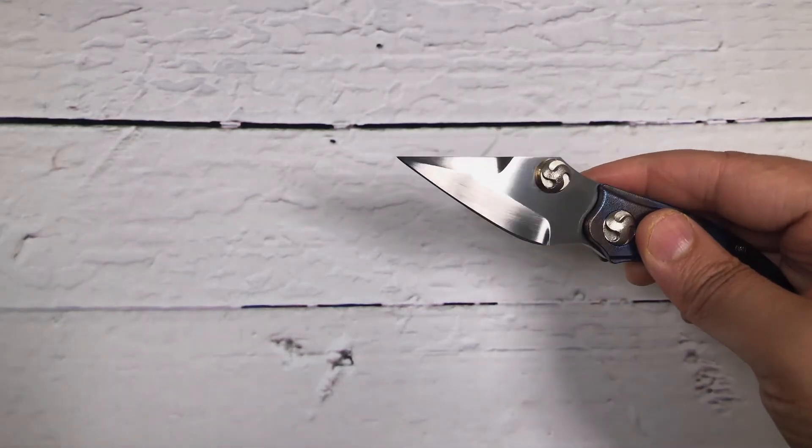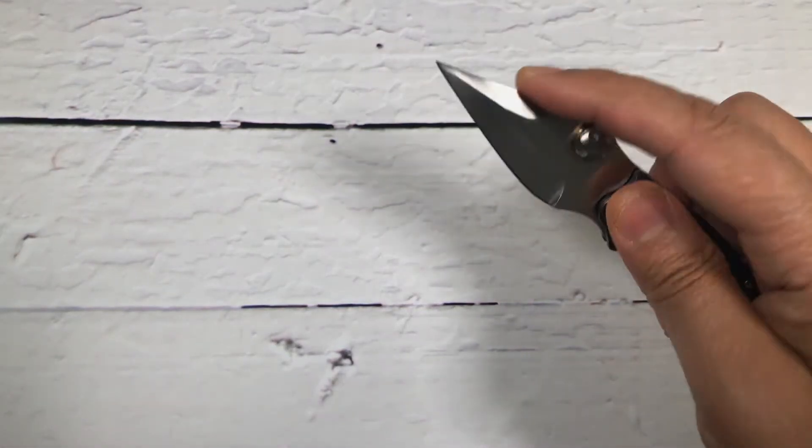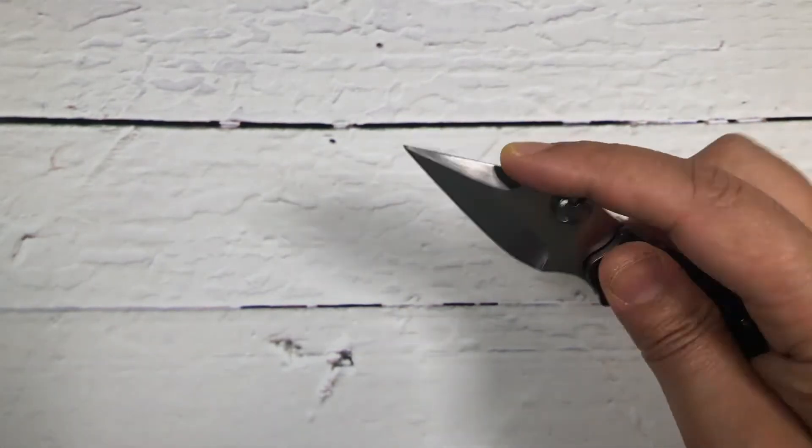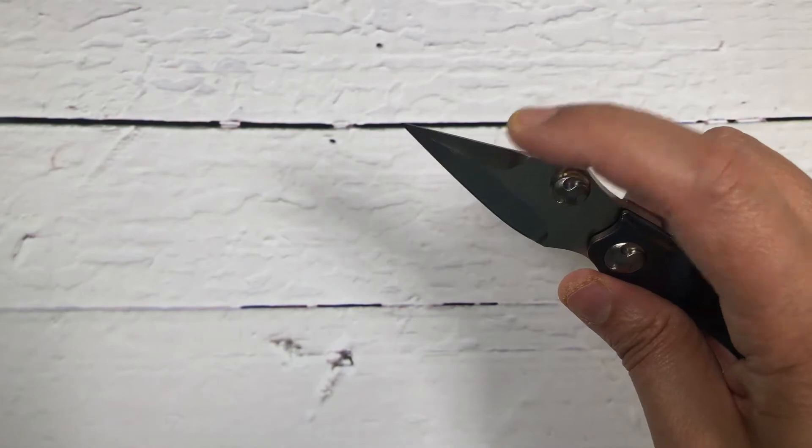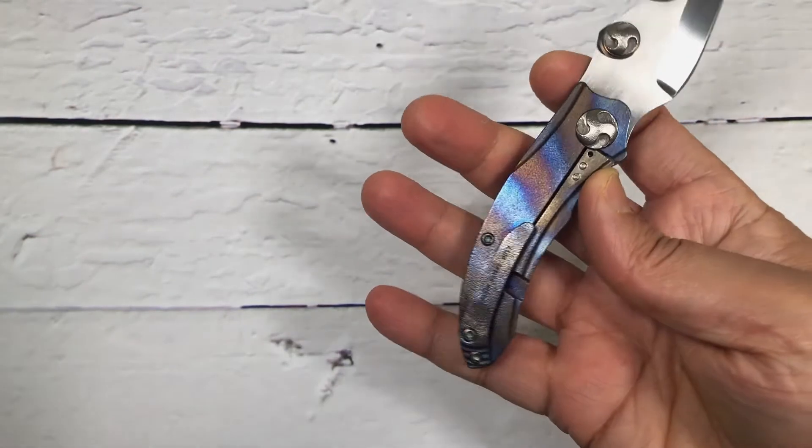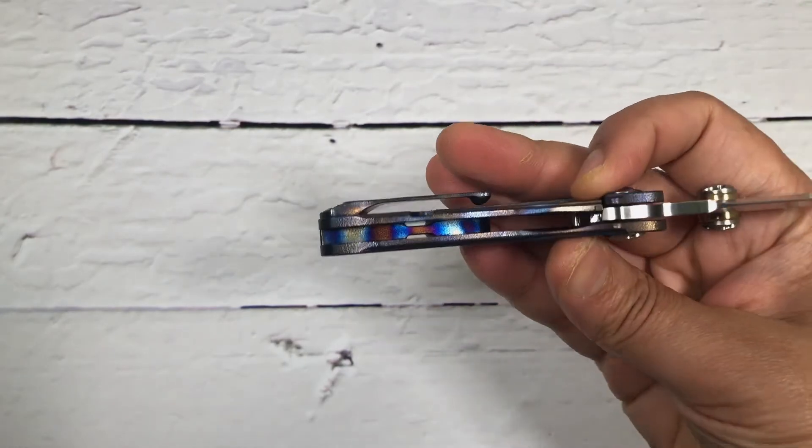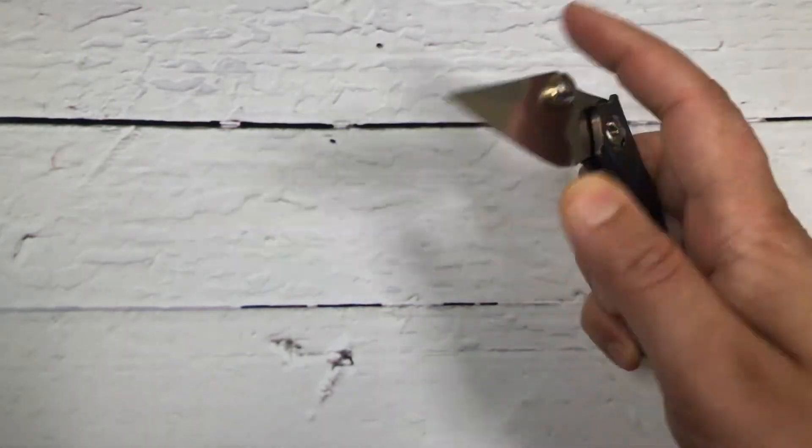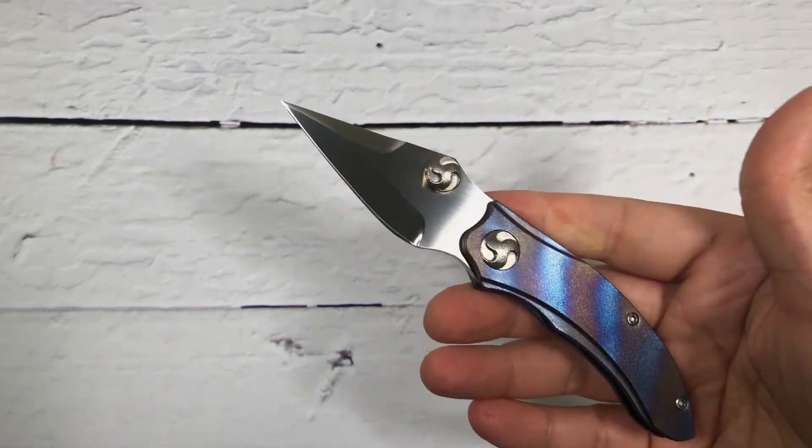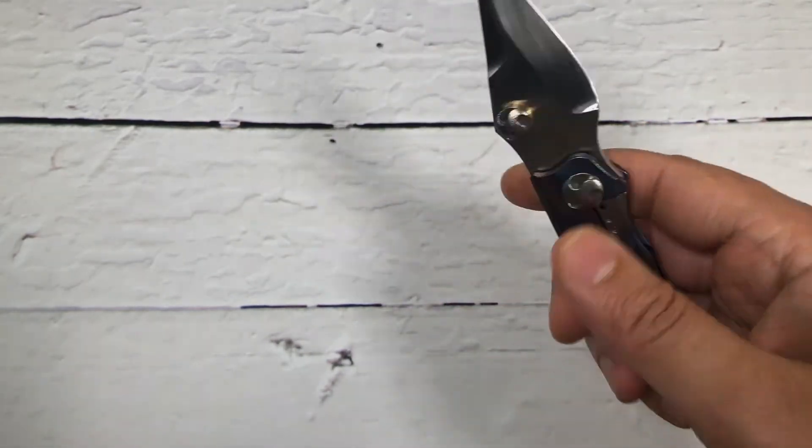Look at that blade. By the way, on the top this is a false edge, this is not an edge. Looks like a dagger but this is not sharp at all. Beautiful. He made the Viper 2 as well, which is a little bigger. This is the original Viper he came up with.